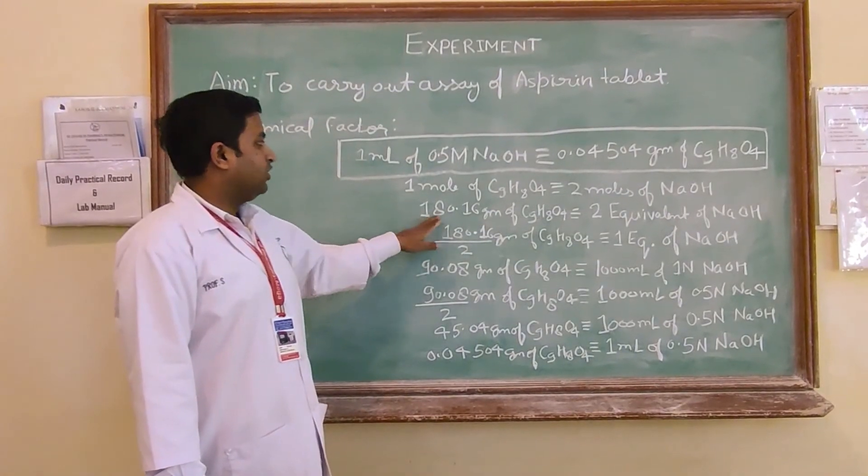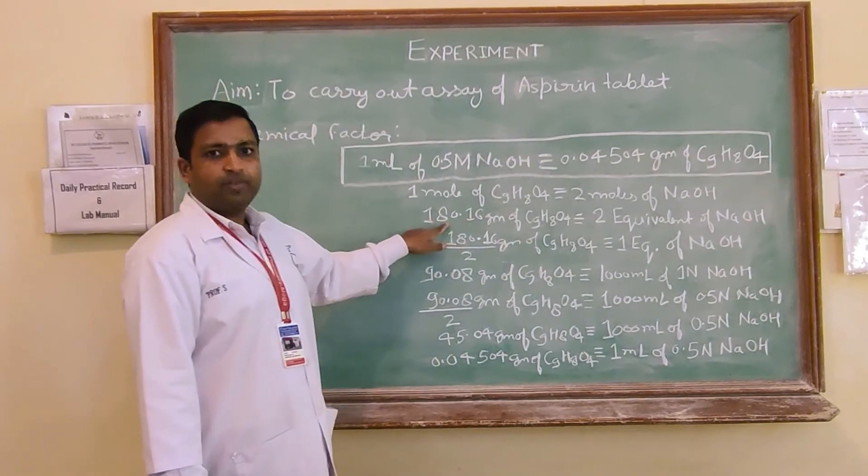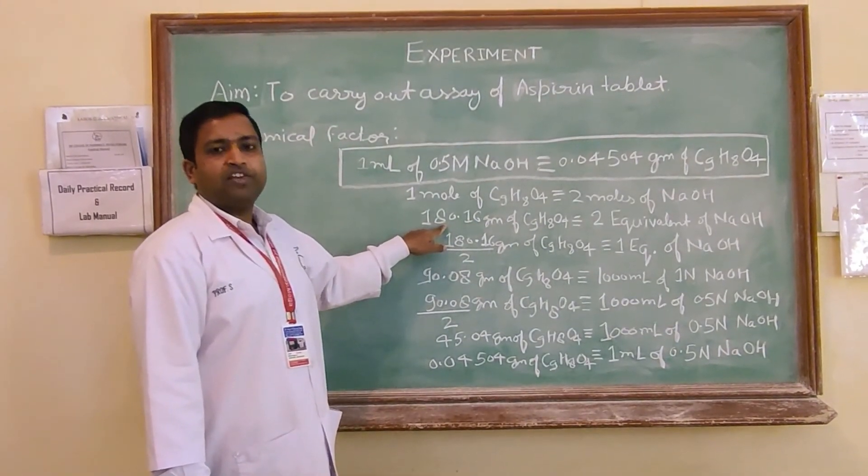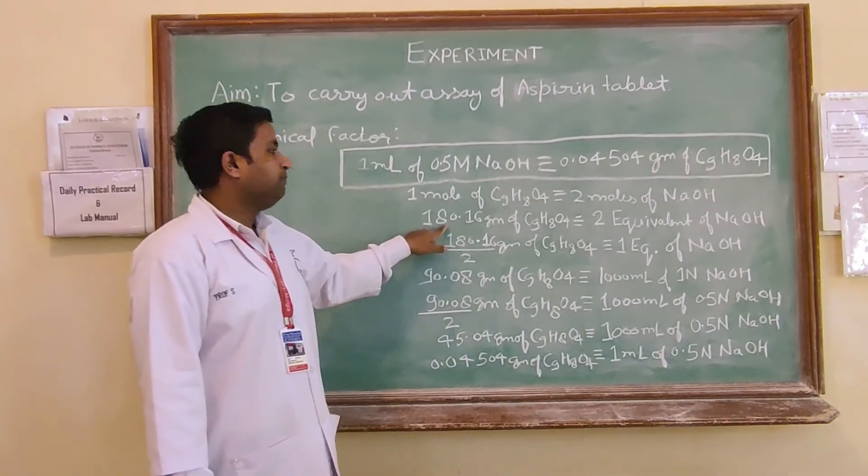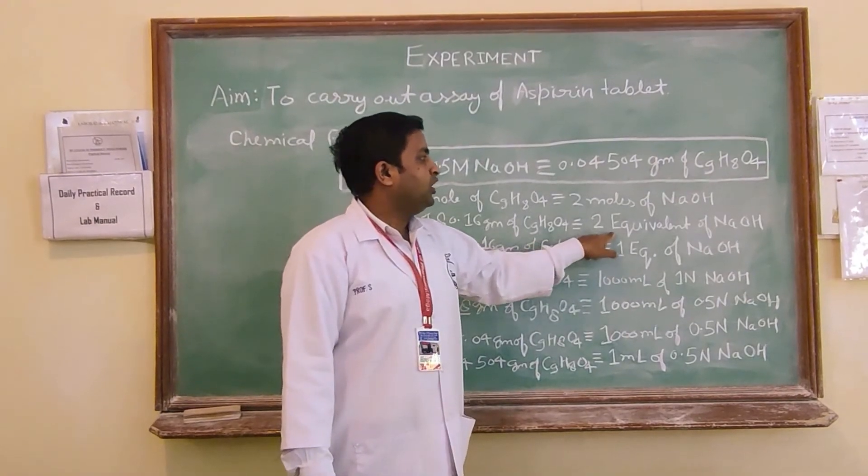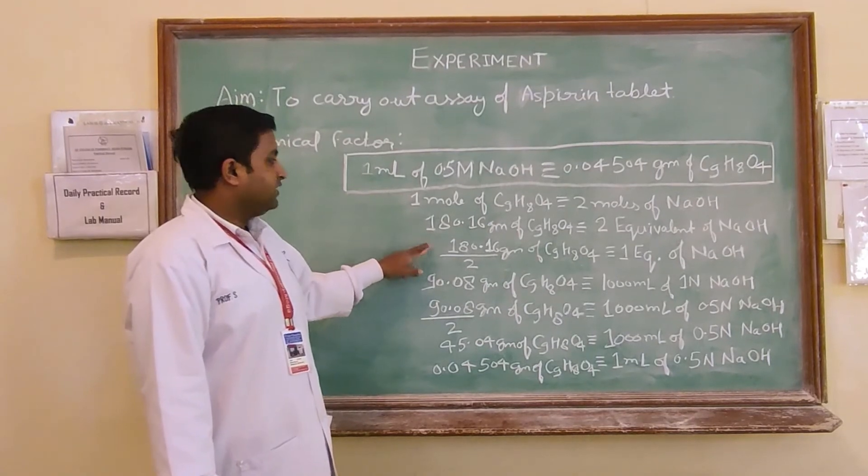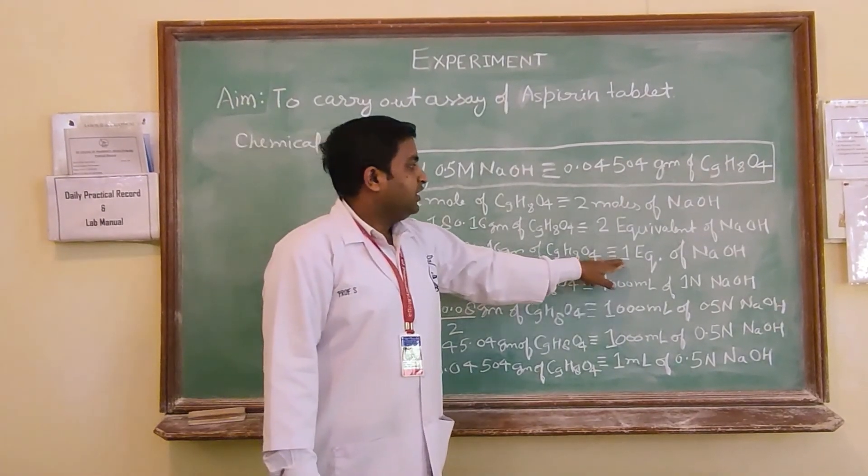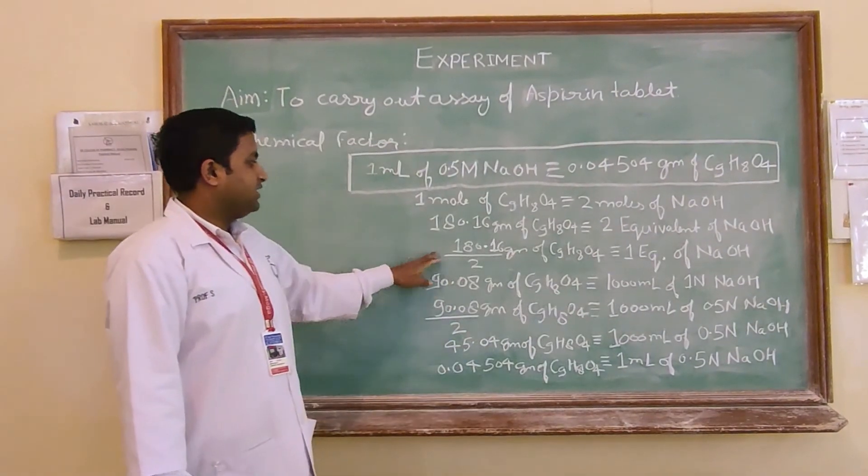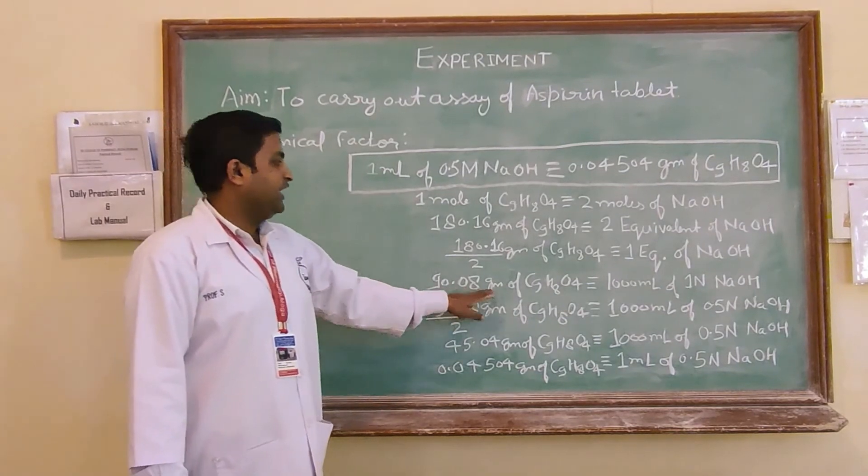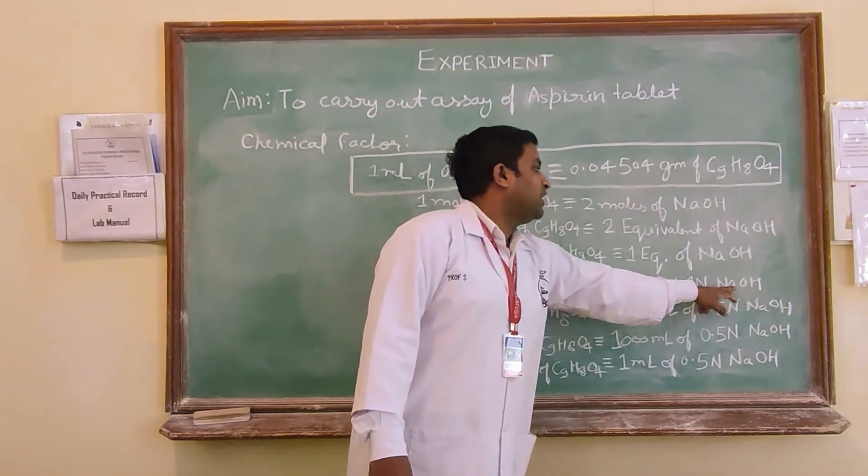We have seen from the reaction that 1 mole of aspirin is equivalent to 2 moles of NaOH. Hence we can write that 180.16 gram of aspirin, this is the molecular weight of aspirin. 1 mole of aspirin contains equal to molecular weight of aspirin. It will be equivalent to 2 equivalents of sodium hydroxide. If we divide this by 2 then it is equivalent to 1 equivalent of NaOH. Hence 90.08 gram of aspirin will be equivalent to 1000 ml of 1 normal NaOH.